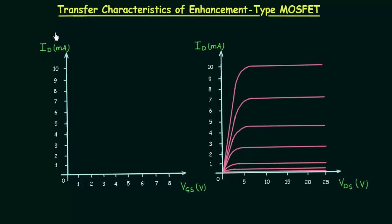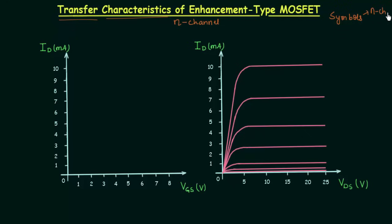In this lecture we will cover two topics. The first one is transfer characteristics of n channel enhancement type MOSFET. The second topic is symbols of n channel enhancement type MOSFET and p channel enhancement type MOSFET. We will see how we can represent n channel and p channel enhancement type MOSFETs.